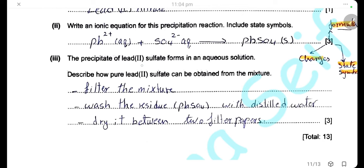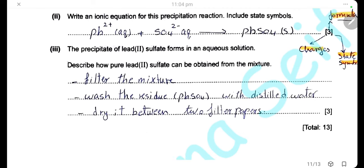The precipitation of lead sulfate forms in an aqueous solution. To obtain pure lead sulfate from the mixture: filter the mixture, then wash the residue (lead sulfate) with distilled water, and dry it between two filter papers.